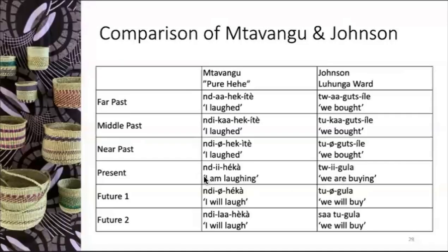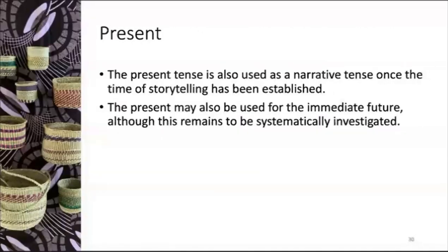The present form — or perhaps a non-past — is marked with E and is a little bit ambiguous. The present tense is also used as a narrative tense once the time of storytelling has been established. It has some progressive or imperfective flavor, although you can also mark it separately for imperfectivity. The present may also be used for the immediate future, though that is not something I have really investigated yet.